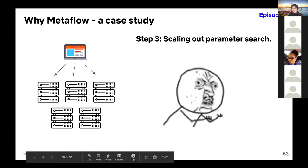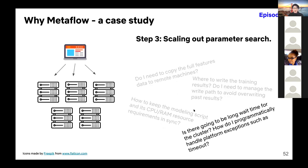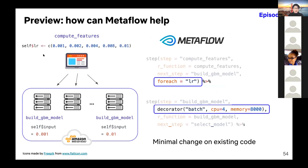All of this is just DevOps — model operations and development operations — none of it is data science. We just want to focus on data science, but DevOps is taking too much time. Here's a quick preview of how Metaflow can help: if you remember how we specify a step in our flow — step name, next step name, and R function — it's very easy to scale things to the cloud. You only need to add a decorator specifying that you're running on AWS Batch with 4 CPUs and 8 gigs of RAM.